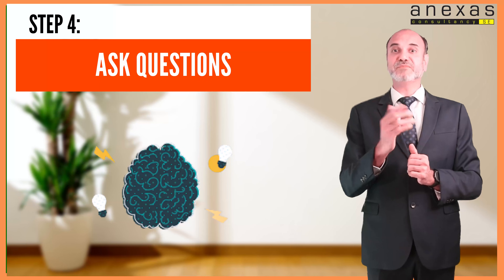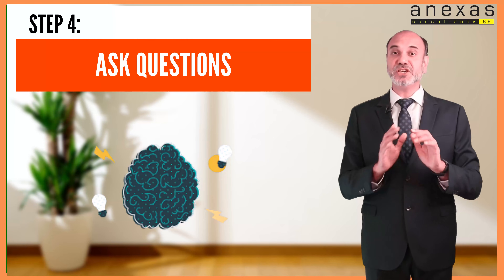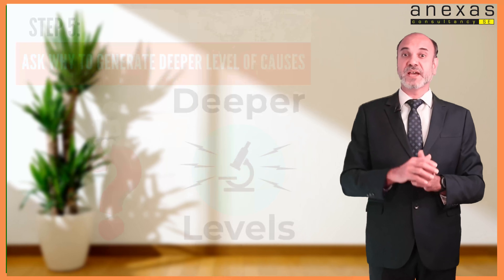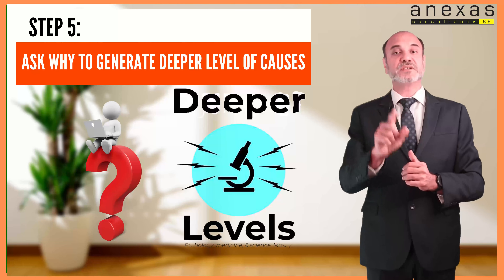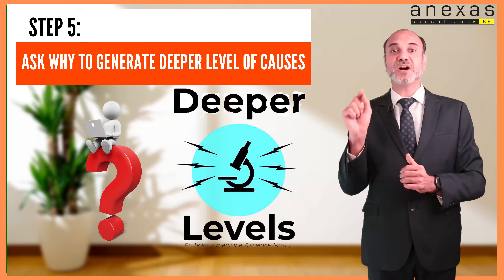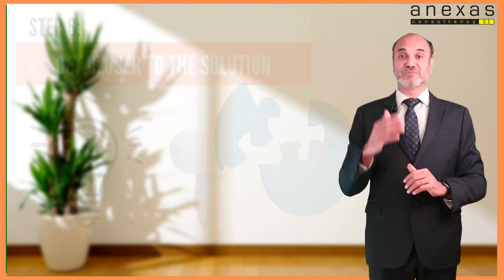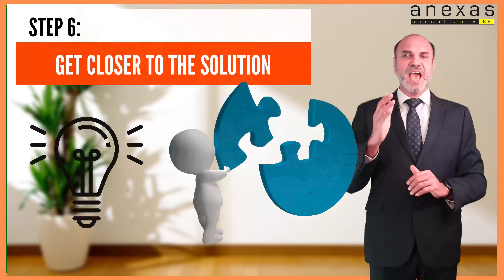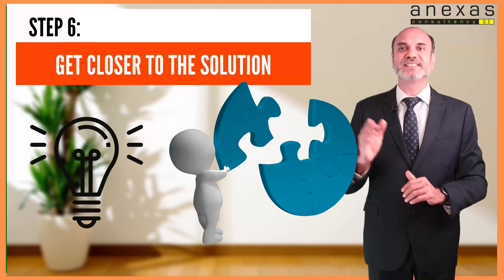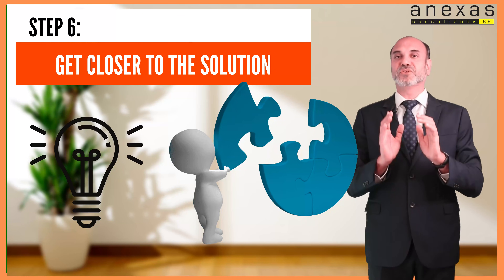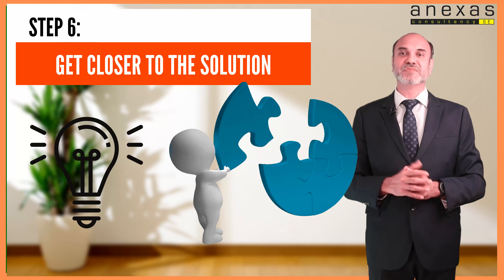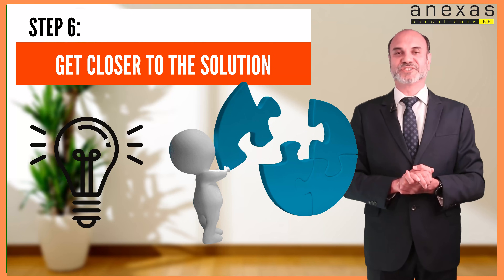Step four: using the brainstorming technique, ask questions like 'Why is it happening?' and find the answer to each cause. Step five: the process does not stop here — you need to continue to ask why and generate deeper levels of causes. Step six: as you do this, you will realize you are getting closer and closer to the root causes of the problem and nearer to the solution. In a simple yet effective way, you will reach your solution in no time.